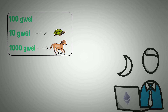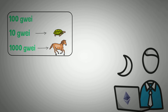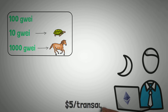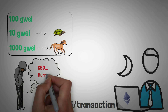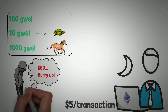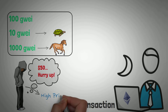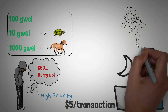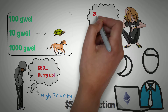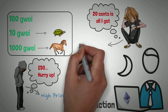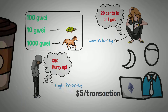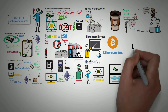Imagine yourself as a miner, and on average you're getting $5 to mine some transactions. However, some guy gives you a $50 tip and tells you to hurry up and do his — you can be sure you're going to do his very quickly. But if someone offers 20 cents, you're only going to do it when all the other transactions are finished first.